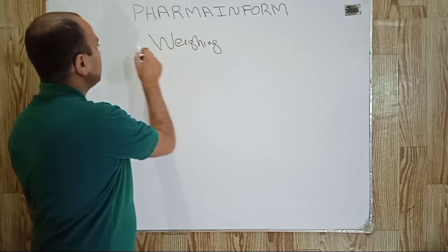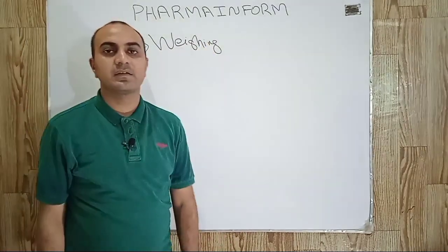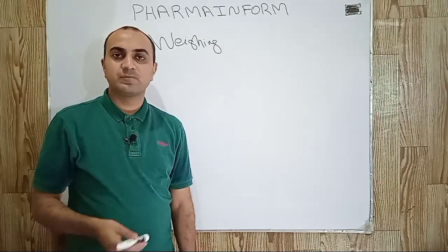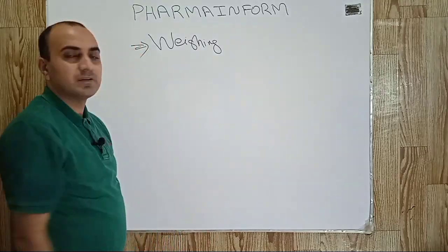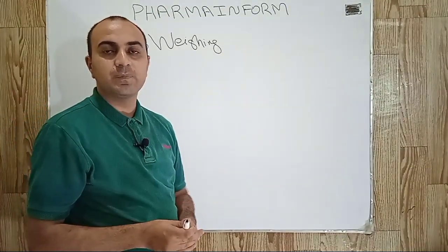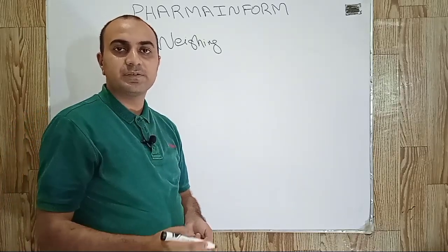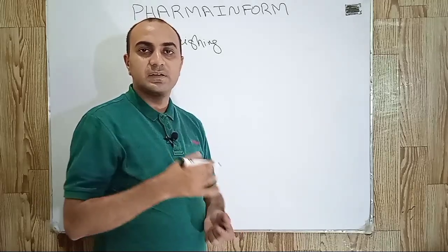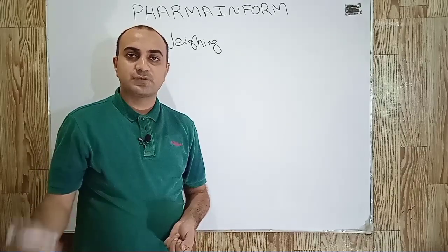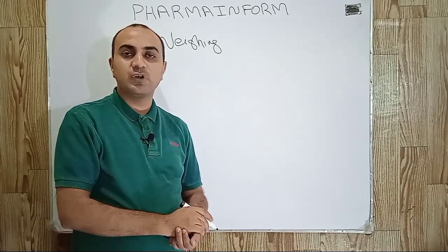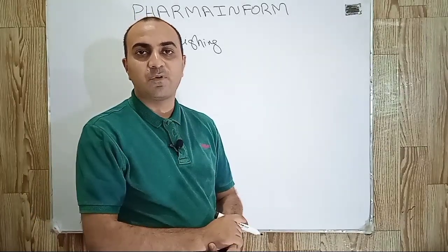We will now discuss the first step of wet granulation, which is weighing, in detail. Weighing, as the name indicates, is to weigh something. Weighing is the first step of wet granulation. In weighing, we are basically verifying our excipients and active pharmaceutical ingredients.